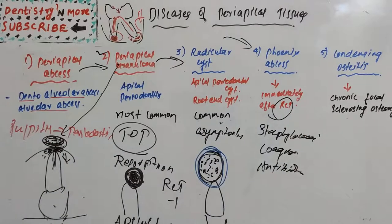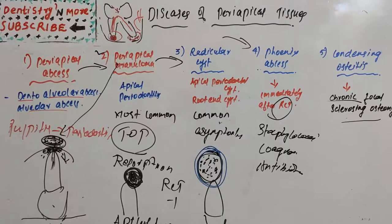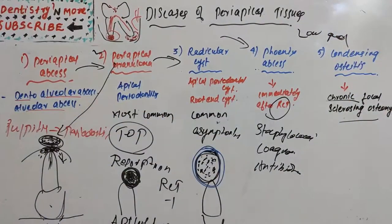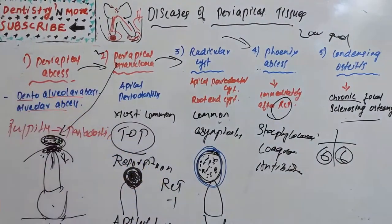The last disease is condensing osteitis, also known as chronic focal sclerosing osteomyelitis. It is a very unusual reaction of bone that occurs in instances of extremely high tissue resistance or in cases of very low grade infection. It occurs mainly in young persons before the age of 20 years. The most commonly affected tooth is the mandibular first molar with a large caries lesion.